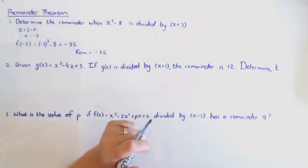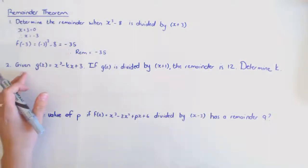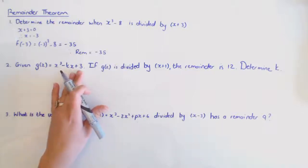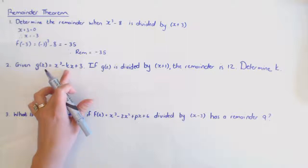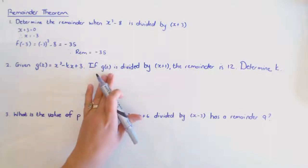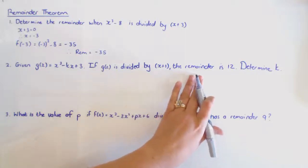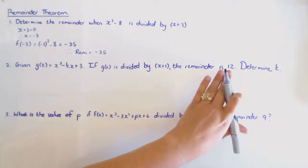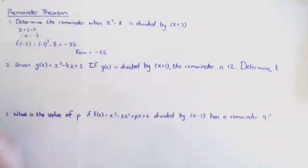In the next question, g(x) is x cubed minus kx plus three — there's a missing value k in the function. This function is divided by x plus one and the remainder is 12. We need to determine the value of k.